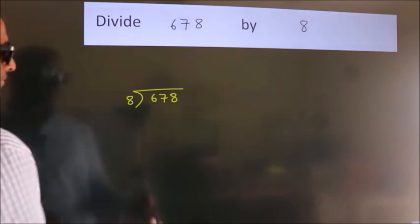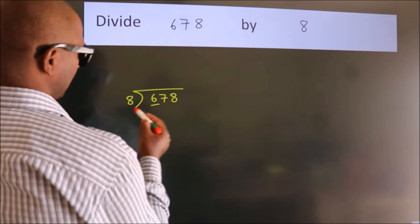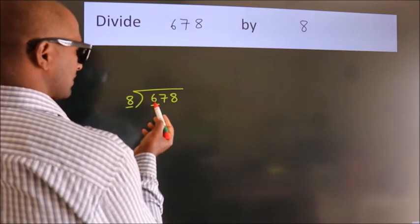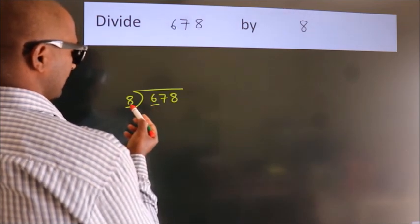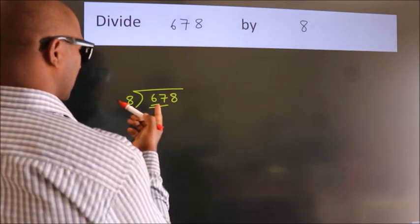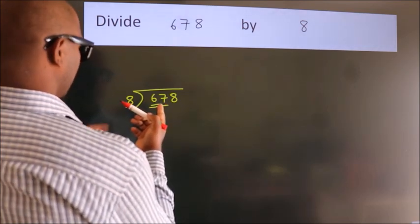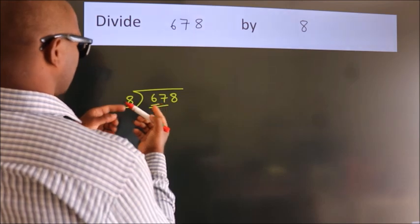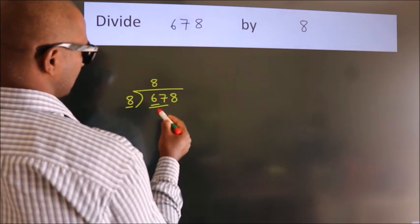Next, we have 6 here and 8 here. 6 is smaller than 8, so we should take two numbers: 67. A number close to 67 in the 8 table is 8 eights, 64.